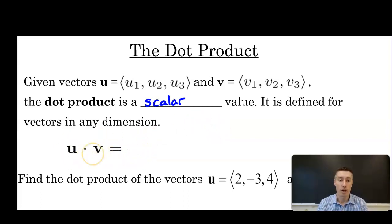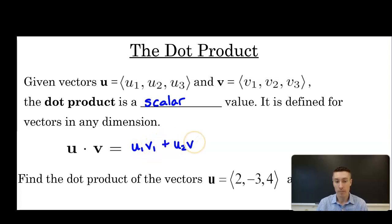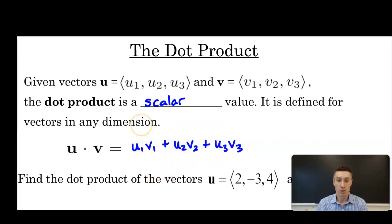The first way to compute the dot product, u dot v, is u1*v1 + u2*v2 + u3*v3. It is the sum of the products of like components of each vector — we multiply the x components together, the y components together, the z components together, and find that sum.